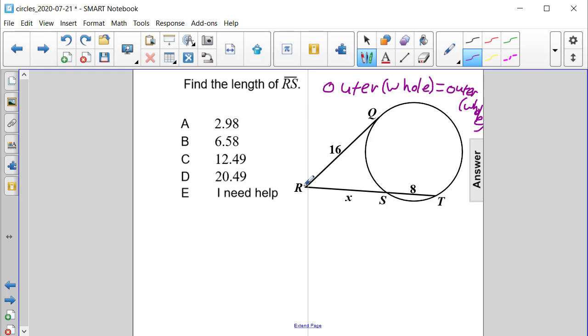So when we look at RQ, we have 16 is the outer, and it's also the entire thing. So we have 16 times 16, or 16 squared, is equal to the outside RS, which is X, times the whole thing, which is RT. And the algebraic expression for that would be X plus 8.